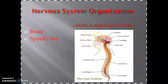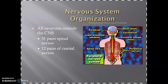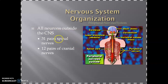This is the brain, and this is the spinal cord which runs through the vertebral column. The peripheral nervous system consists of 31 pairs of spinal nerves and 12 pairs of cranial nerves.